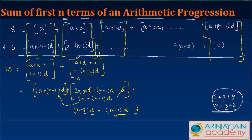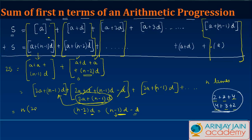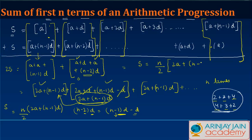So every single time you solve a pair, you get 2a plus n minus 1 times d. Even the last pair gives the same thing. This sum appears n times in total, so 2S equals n times 2a plus n minus 1 times d. Therefore S equals n over 2 times 2a plus n minus 1 times d. The sum of n terms of an arithmetic progression is n upon 2 times 2a plus n minus 1 times d.